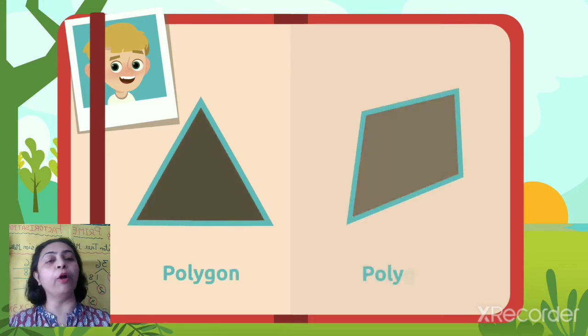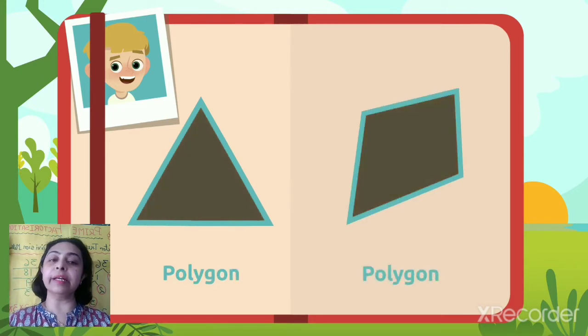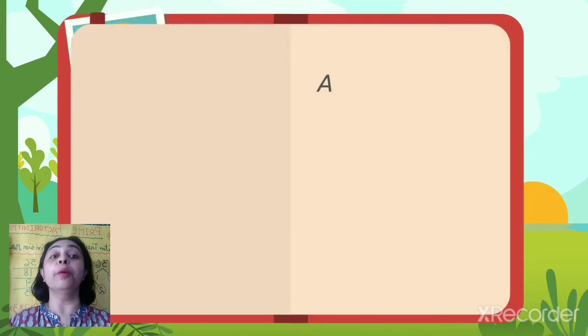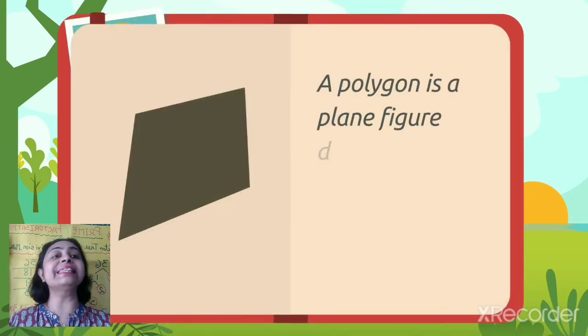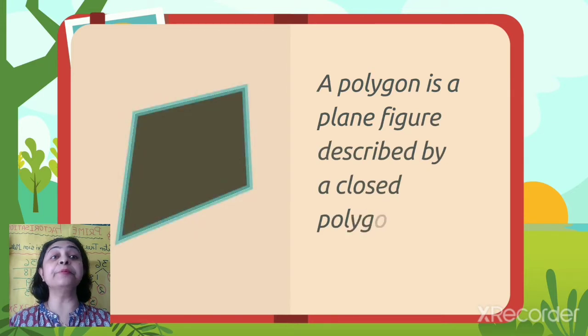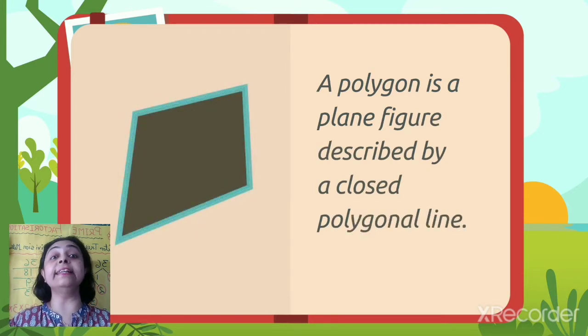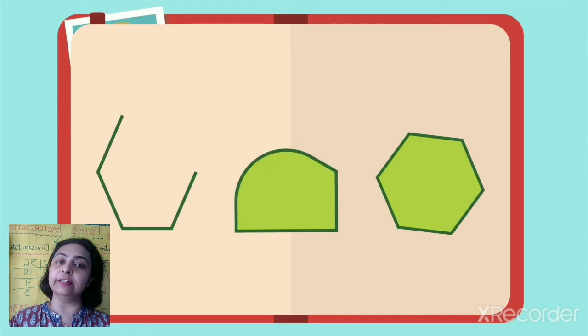So children, polygons are when some straight lines make one closed surface. A polygon is a plane figure described by a closed polygonal line.